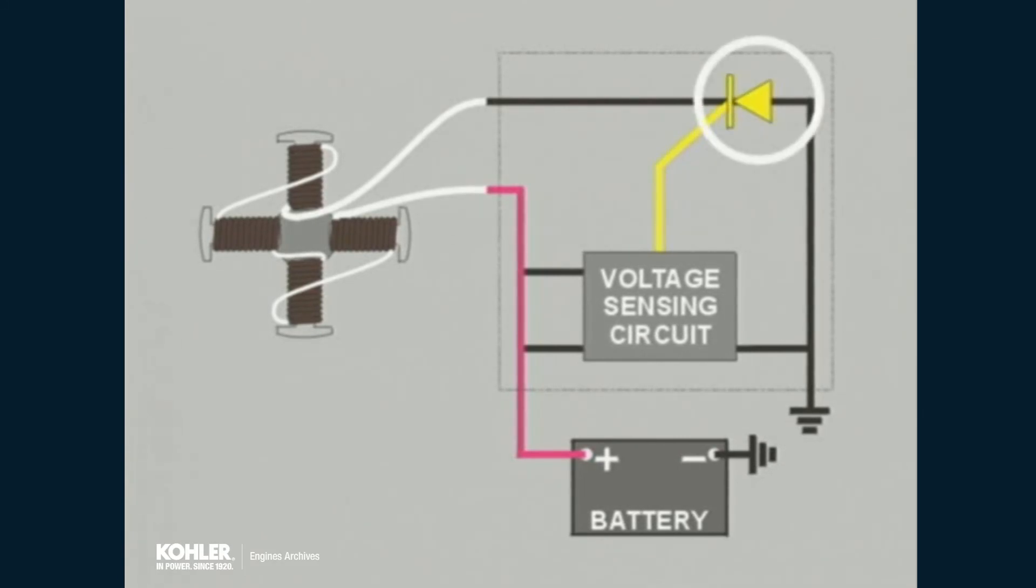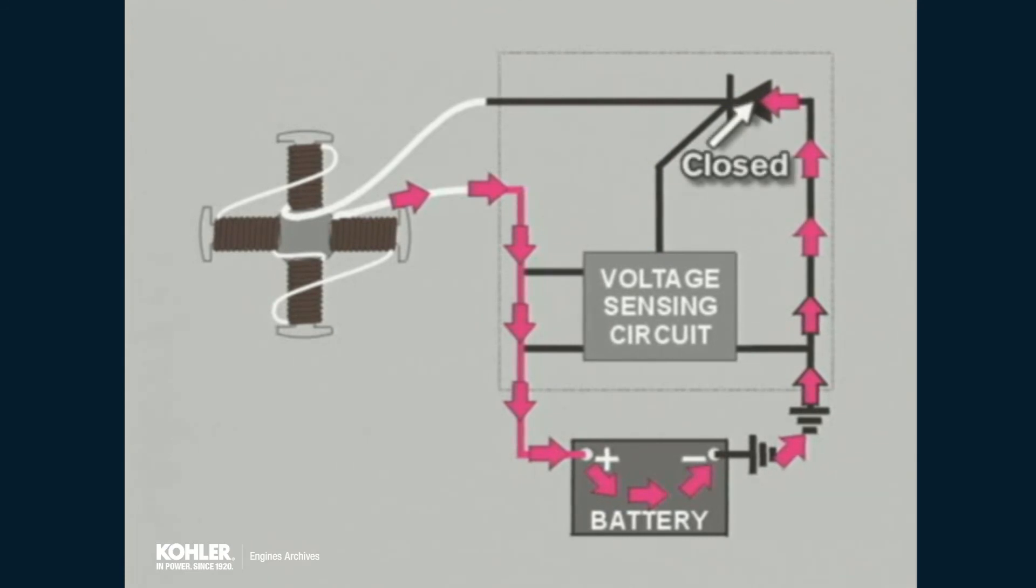The solid-state switch acts as both a half-wave rectifier and a switch. When the battery voltage is low, the solid-state switch is closed and the charging circuit through the battery and stator is functioning. As the battery state reaches full charge, the sensing circuit sends a signal to open the solid-state switch, opening the charging circuit and regulating voltage to a specified level.